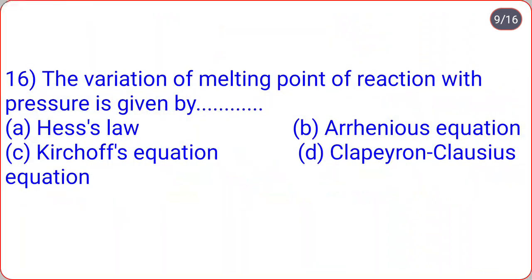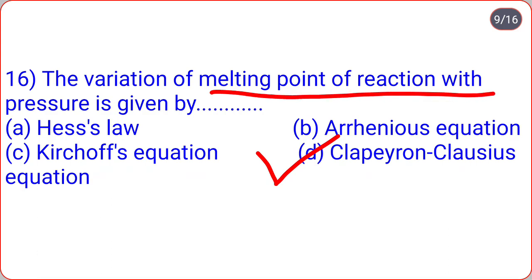The variation of melting point of a substance with pressure is given by which equation? Options are Hess's law, Arrhenius equation, Kirchhoff's equation, or Clausius-Clapeyron equation. The correct option is D — the Clausius-Clapeyron equation gives the variation of melting point with pressure.